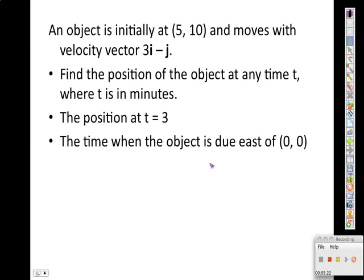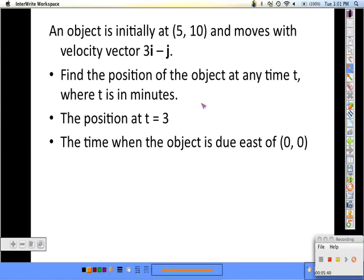Here we're using a vector to help us find an object's position, and we're given it in unit vector form. We can write this position as a vector equation. Our point is (5, 10) plus t, and then the direction vector is (3, -1).